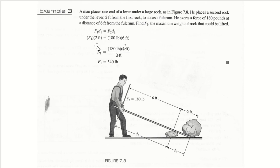Maximum weight of the rock that could be lifted. If we take the formula, it's force 1, which is the unknown, times 2 feet, and 180 pounds at 6 feet. That comes out to 540 pounds. We could lift a 540 pound rock by exerting 180 pounds of force.